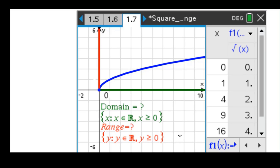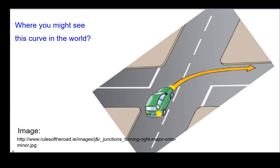So there's the domain, there's the range. Where might you see the square root function in the world? Pretty clever.